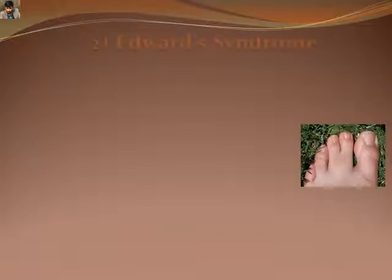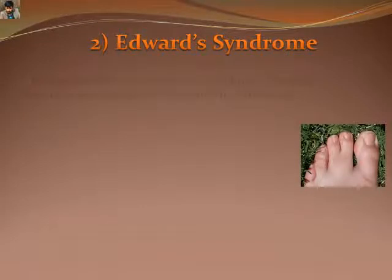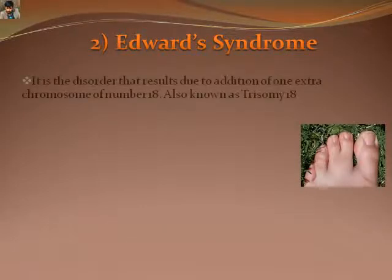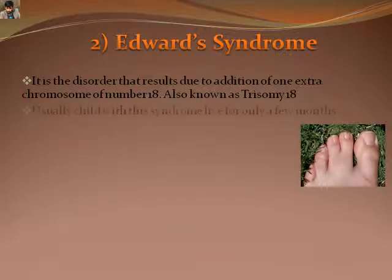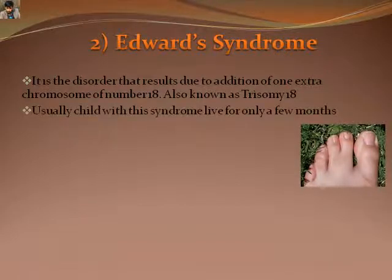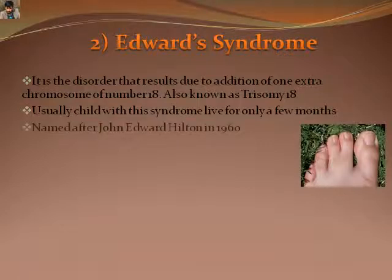When there is one extra chromosome at chromosome number 18, there are three chromosome 18s, known as trisomy 18 or Edwards syndrome. Some disorders observed in a child with Edwards syndrome are heart defects, disabled intelligence, growth deficiency, small jaw, and webbed toes.